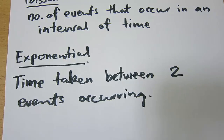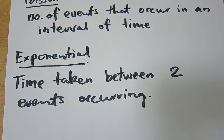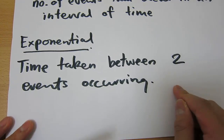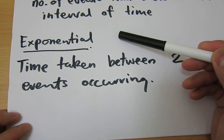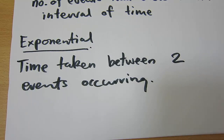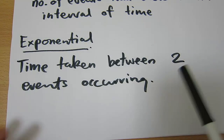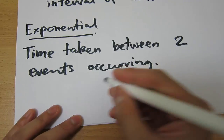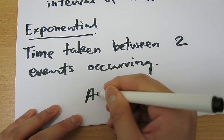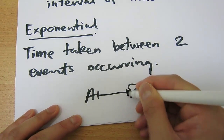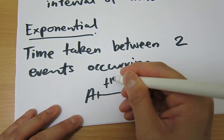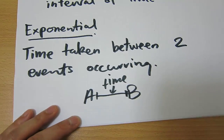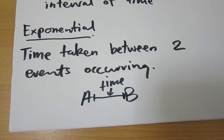You can see that they're very closely related. Today we're going to talk about the exponential distribution. Whenever you see a question that talks about two events occurring — let's say A and B — and they want you to calculate the time between A and B occurring, then you're dealing with an exponential question.